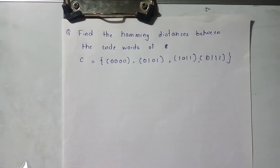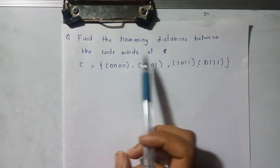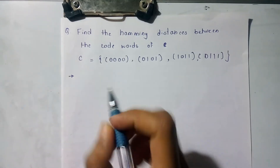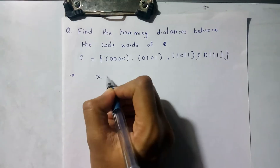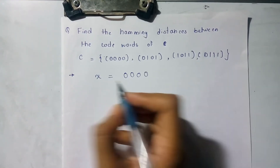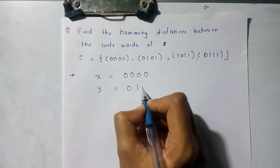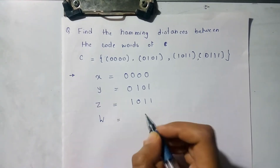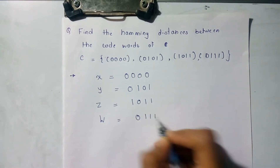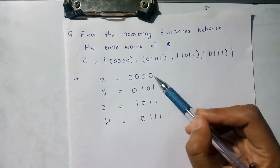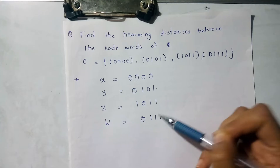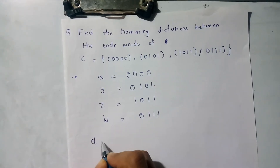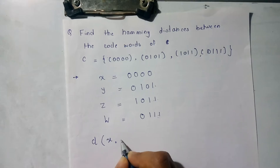Question on Hamming distance: find the Hamming distances between the codewords. Four codewords are given: x = 0000, y = 0101, z = 1011, and w = 0111. We have to find the Hamming distance between each pair: x,y and x,z and x,w and y,z and y,w and z,w. First, find the Hamming distance between x and y.